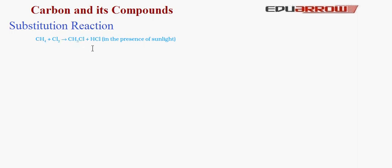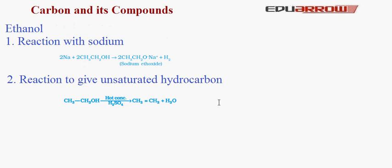Let us now talk about ethanol. Ethanol is C₂H₅OH. The functional group attached in ethanol is alcohol, that is -OH. Reaction with sodium: ethanol reacts with sodium to give sodium ethoxide (2CH₃CH₂O⁻Na⁺) and hydrogen gas.